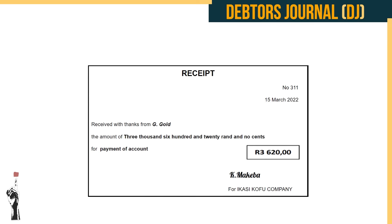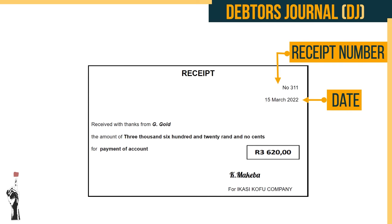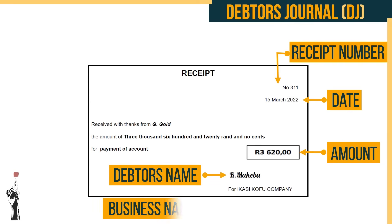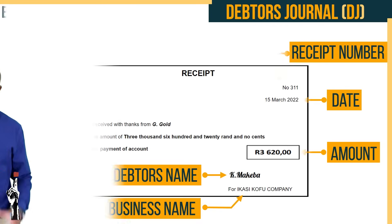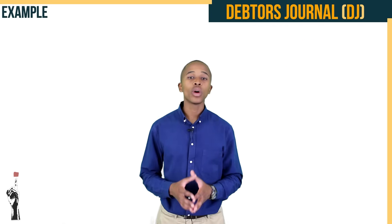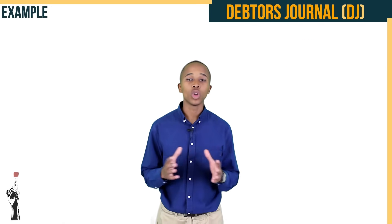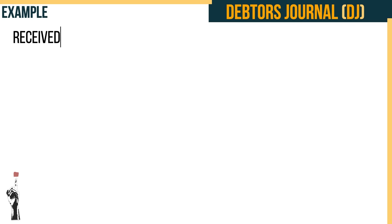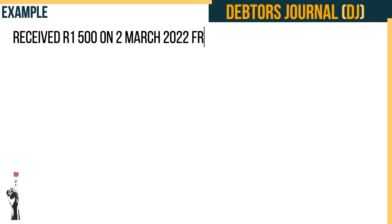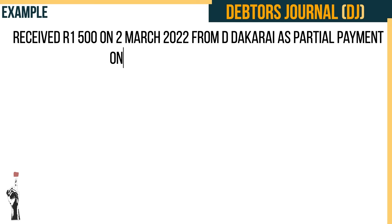Let's do a recap on the receipt layout, as you've already covered it in previous lessons. The date, receipt number, debtor's name, the amount, and our business name are very important pieces of information that should appear on a receipt.